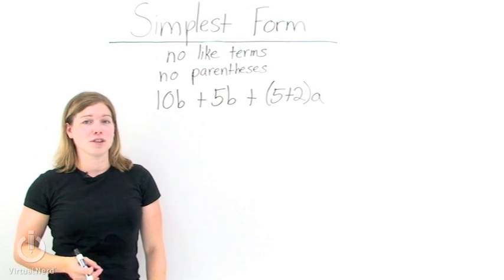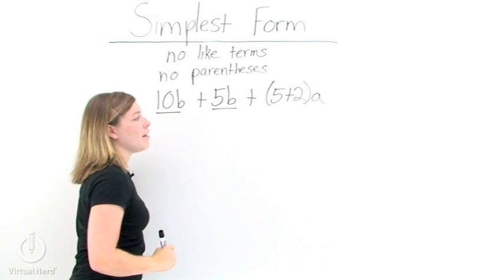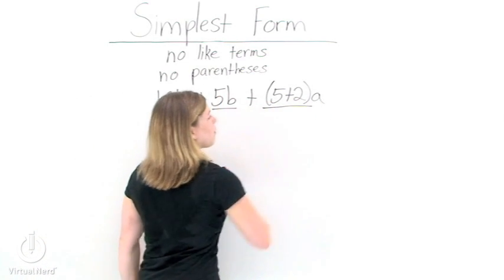This expression is not in simplest form. We have like terms, 10b and 5b, and we have parentheses around 5 plus 2.